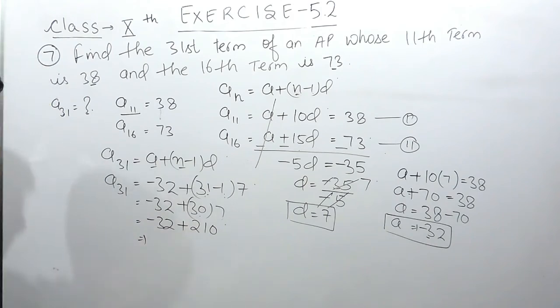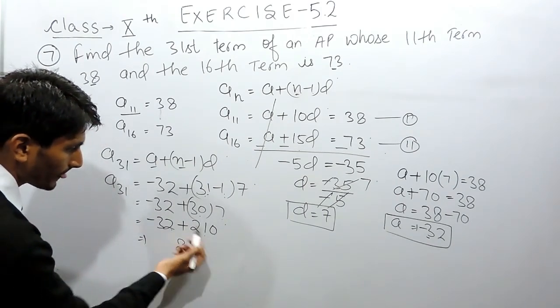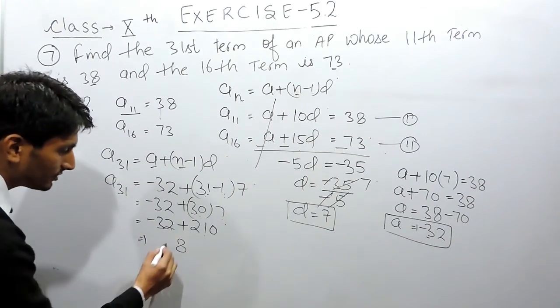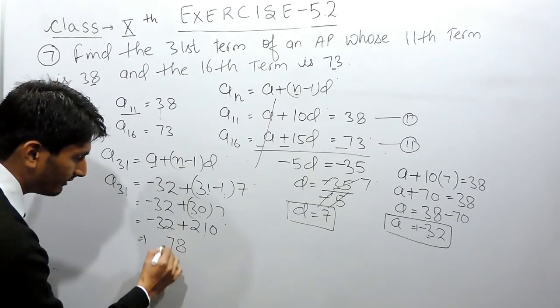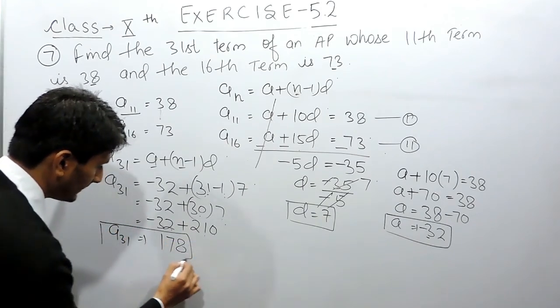Now we have to subtract, so 210 minus 32 is 178. So the 31st term must be 178.